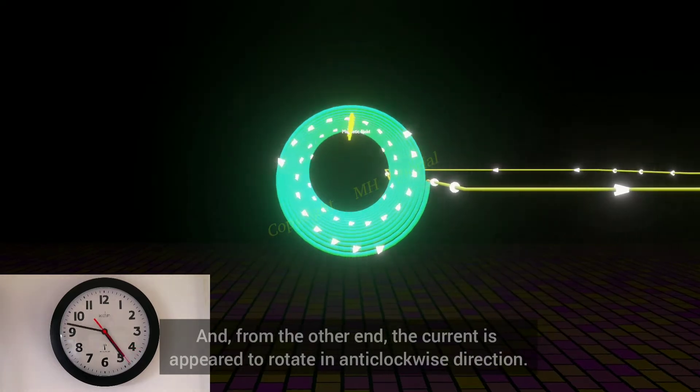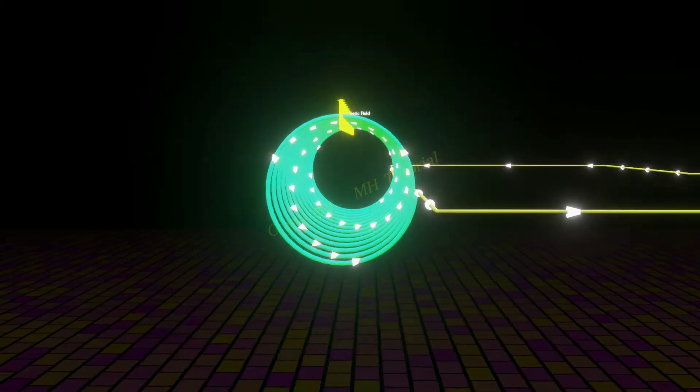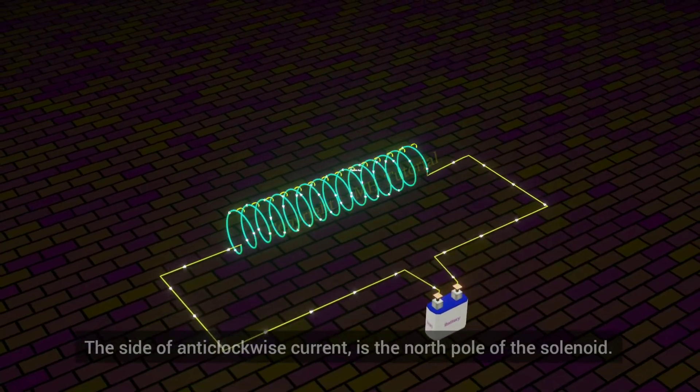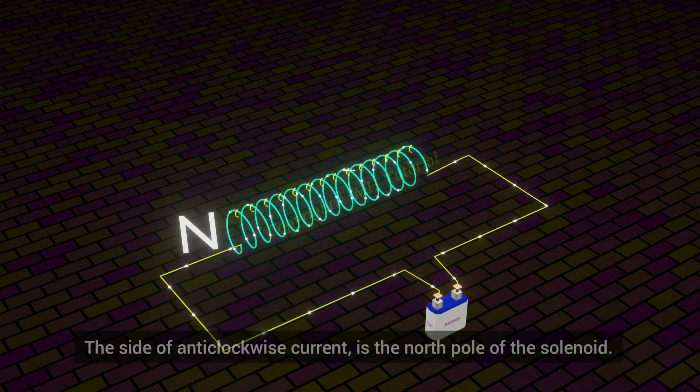And from the other end, the current is appeared to rotate in anticlockwise direction. The side of anticlockwise current is the north pole of the solenoid.